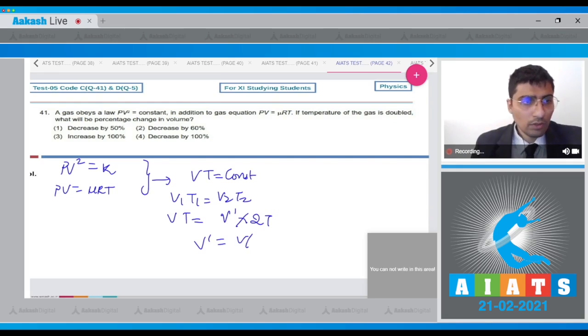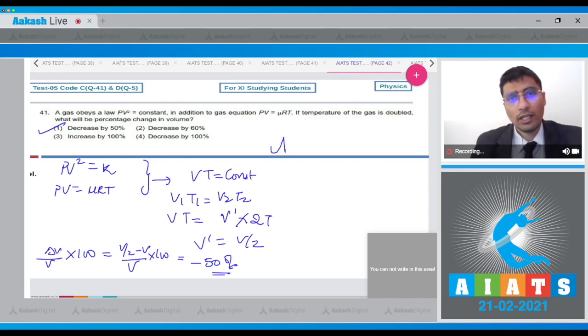Therefore, V' will be V by 2. The percentage change in the volume will be ΔV by V times 100, that is V/2 minus V by V times 100, and this will be minus 50 percent, that is a decrease of 50 percent. Hence the correct answer is option 1.